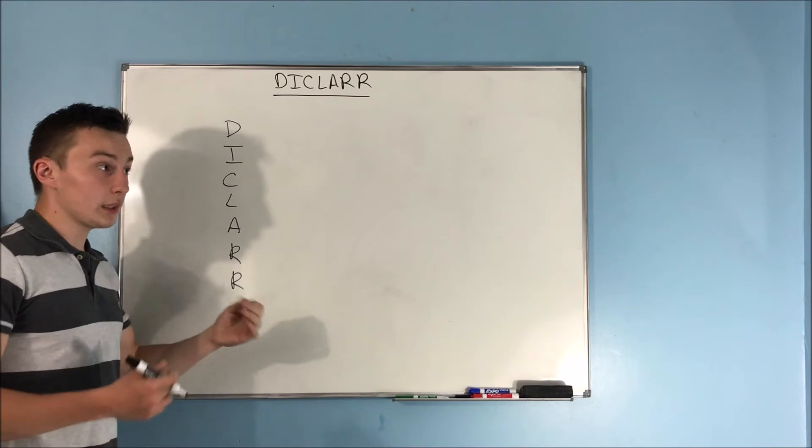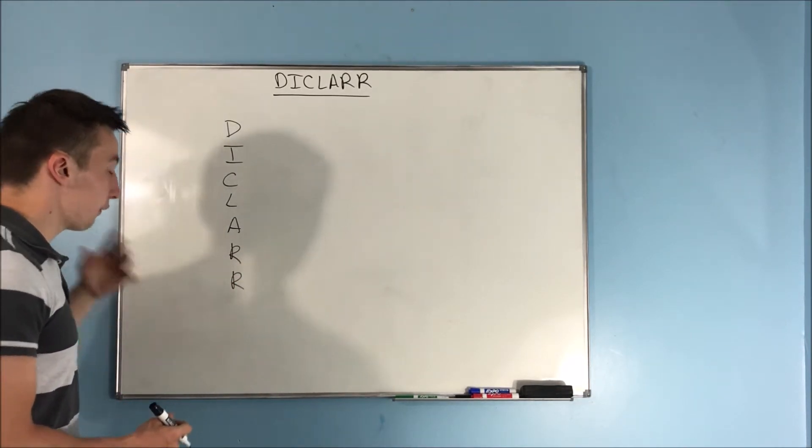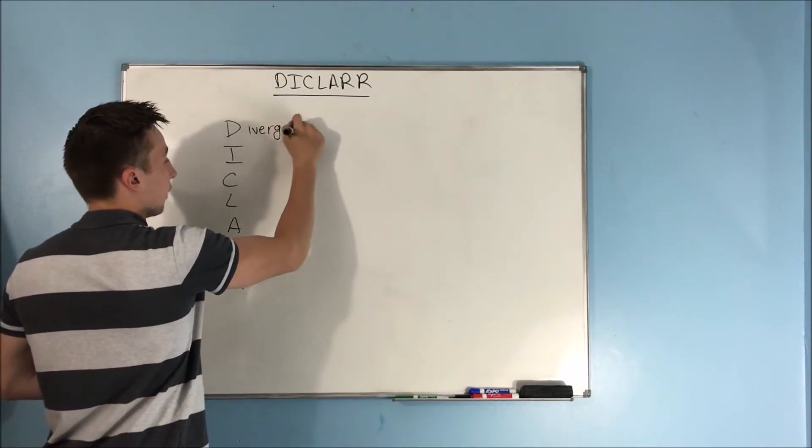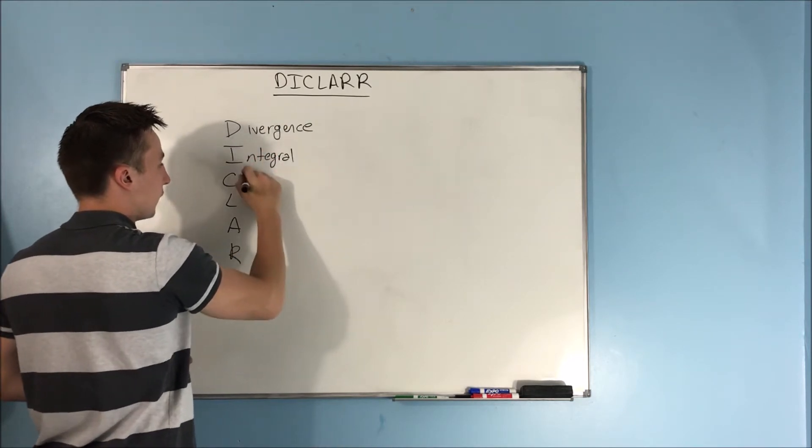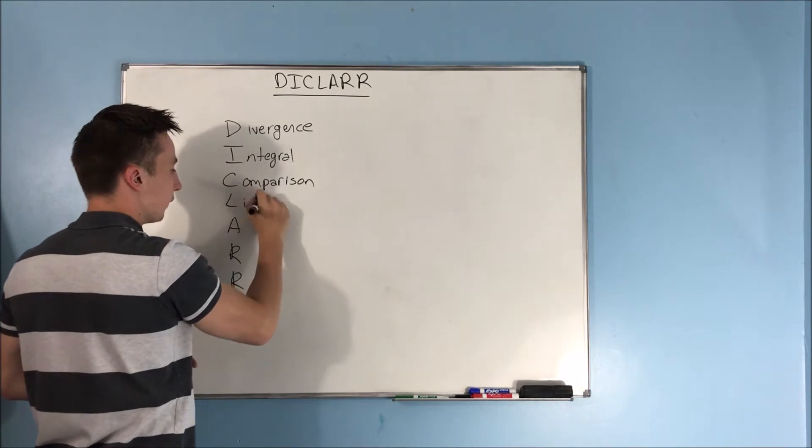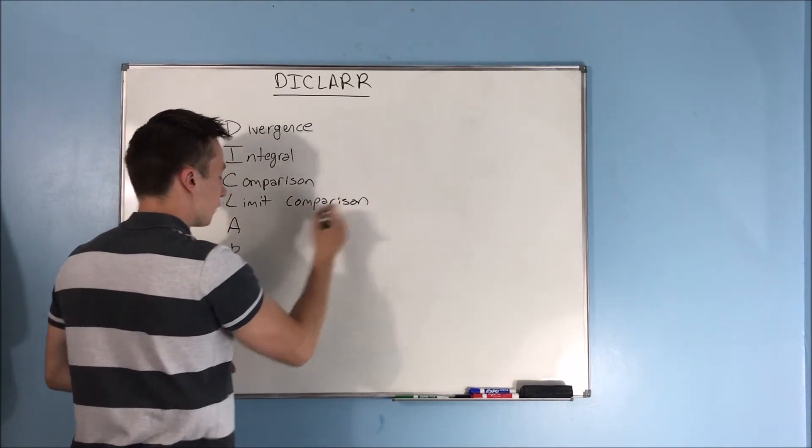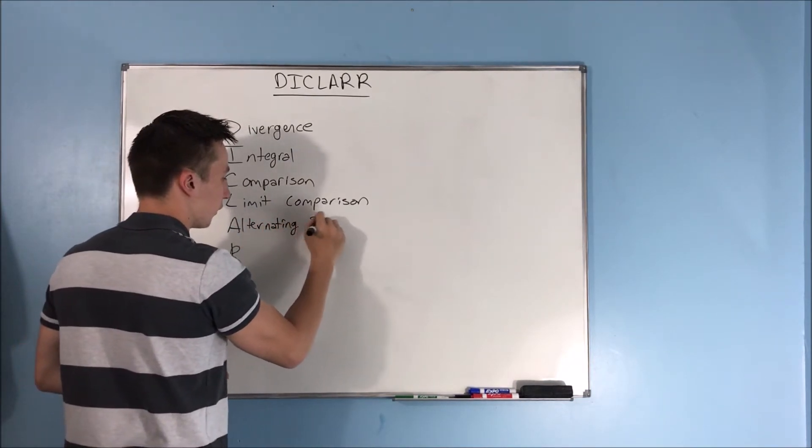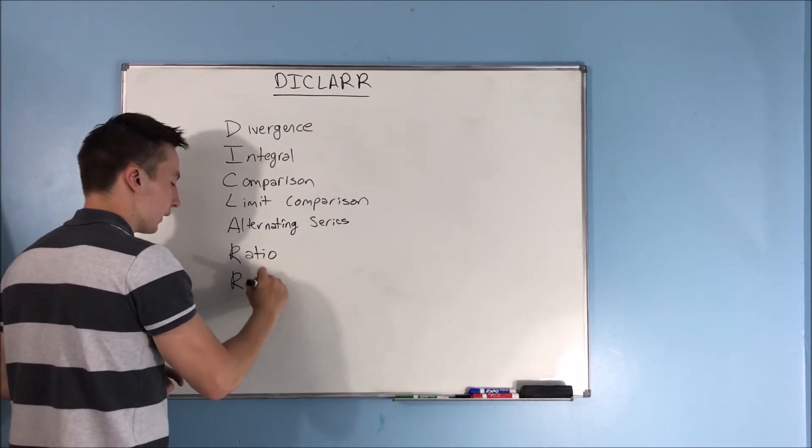And that wasn't just a way for me to memorize the seven tests. This DICLAR stands for the seven tests: the divergence test, the integral test, the comparison test, the limit comparison test, the alternating series test, the ratio test, and the root test.